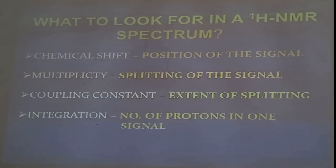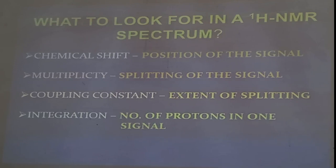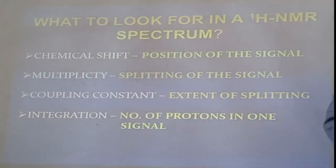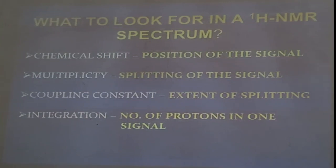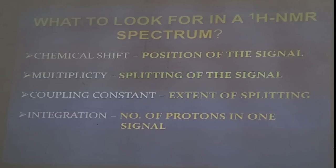Chemical shift is also known as the position of the signal. Last time I showed you the frequency domain spectrum of a molecule in which you saw different signals at different positions — there were about 10 signals placed at different positions in the spectrum. So the position of the signal is measured through the chemical shift. Once you know the positions of all these signals in the spectrum, it gives you information about the types of hydrogens present in your molecule.